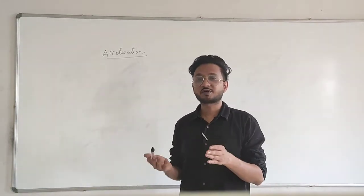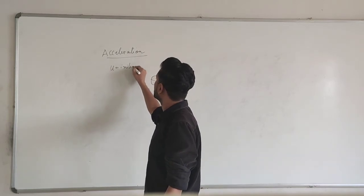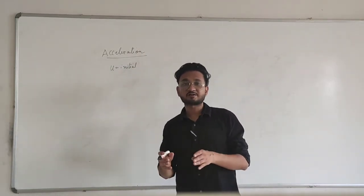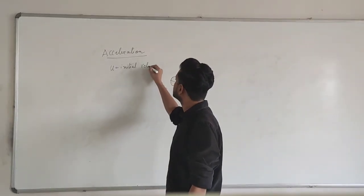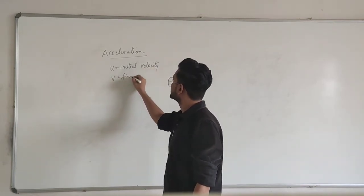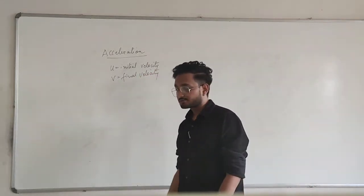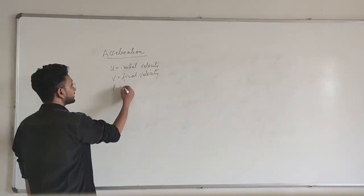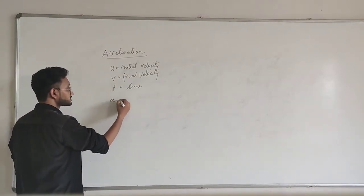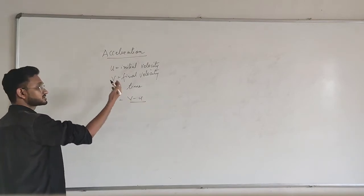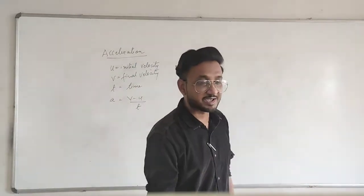If the velocity of the object changes, that is known as acceleration, of course with respect to time. Let's say u is the initial velocity of the object — even if the object is starting from zero, then 0 meters per second will be the initial velocity. So u is equal to initial velocity, v is final velocity, and t is time. According to the definition, acceleration a is equal to final velocity minus initial velocity divided by time.